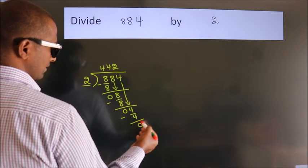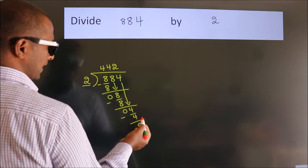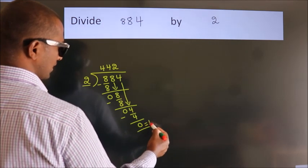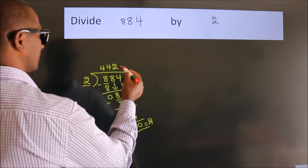After this, no more numbers to bring it down. So, we stop here. This is our remainder. This is our quotient.